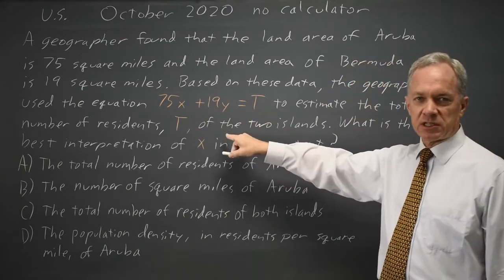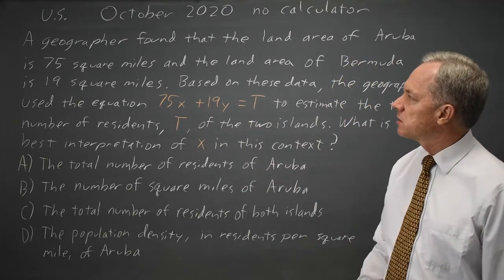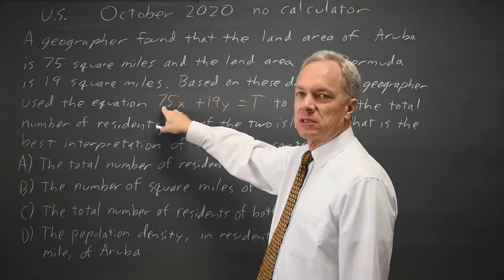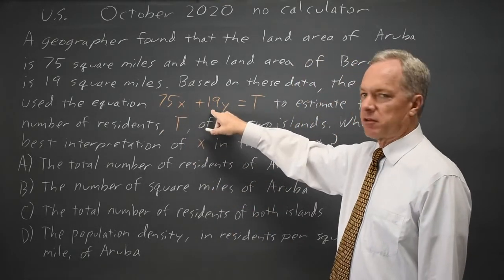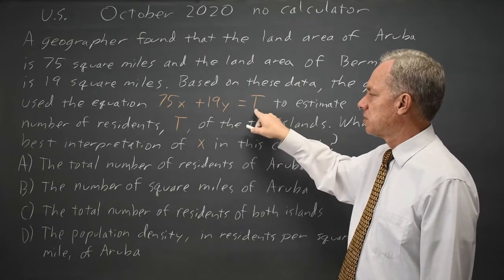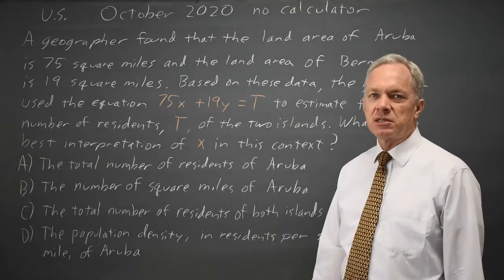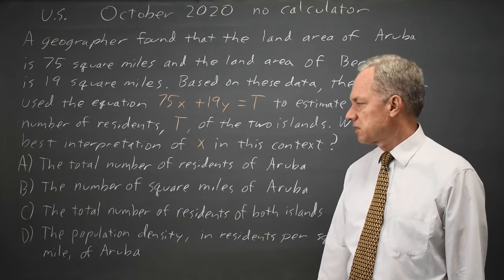the total number of residents of the two islands. So that's the area of Aruba times x plus the area of Bermuda times y equals the total number of residents. And they're asking, what's the best interpretation of x in this context?